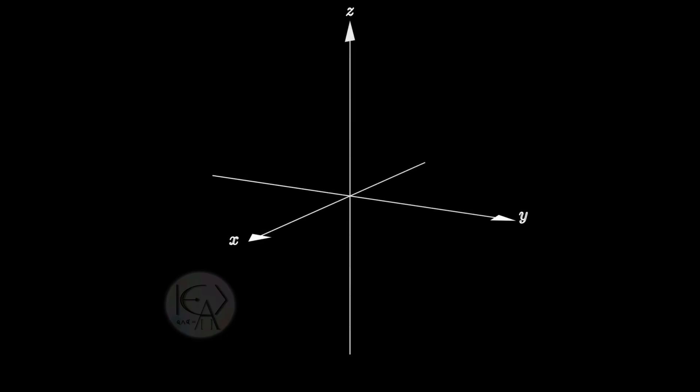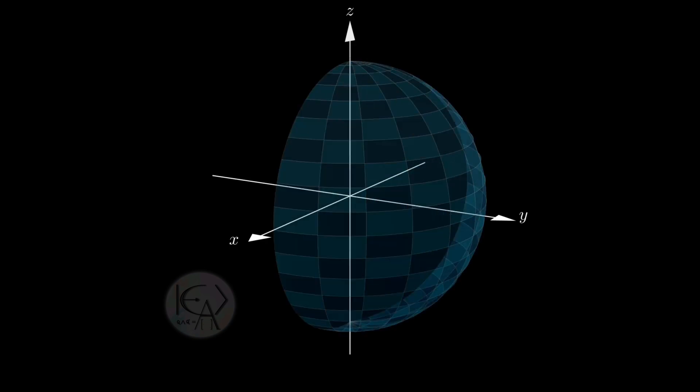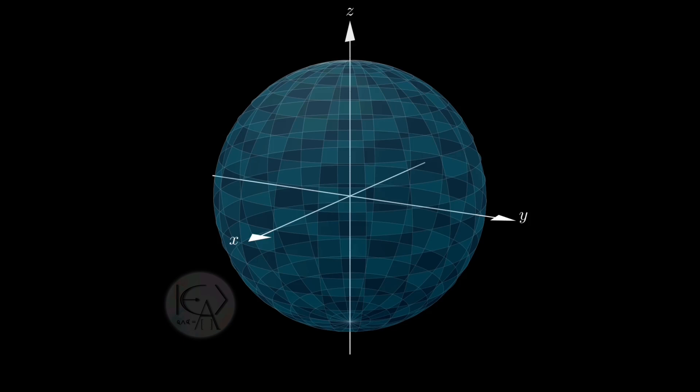We begin by setting up the space. We have the three-dimensional Cartesian coordinate system with x, y, and z-axis. Now we introduce a sphere of radius capital R centered at the origin.